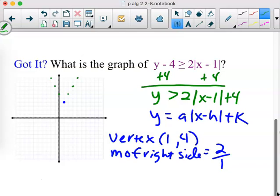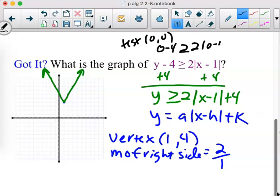Good catch because I forgot to write it down up there. Got it in the purple. There it is. It's solid. 0,0, good test point. Yeah, it's not on the v. Remember, we don't want to test things that are on the lines, on the v's. 0,0 is not in there at all. So test 0,0. 0 minus 4 is greater than or equal to 2 times the absolute value of 0 minus 1. We have a little more math to do this time. What's 0 minus 4? Negative 4.